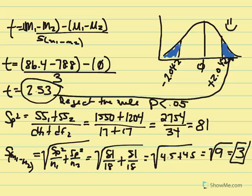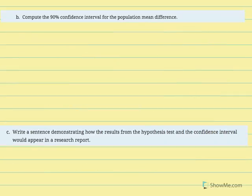We'll finalize this problem with a confidence interval and a concluding statement. We're going to compute a 90% confidence interval for the population mean difference — estimating the range where we anticipate the true population mean difference to fall. Our equation is: mu1 minus mu2 equals sample mean 1 minus mean 2, plus or minus a t value from the table, multiplied by our estimated standard error of the mean difference.